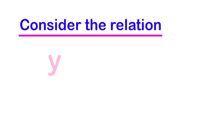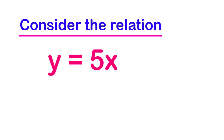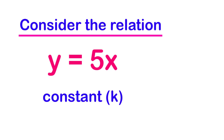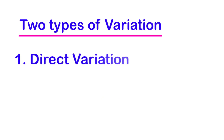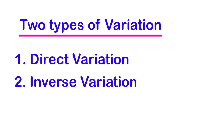Consider the relation y equals 5x — a change in x will result in a change in y. The variable or quantity which remains unchanged is called the constant, and it is usually denoted with the letter k. In this video we are going to talk about two types of variation: direct variation and inverse variation.